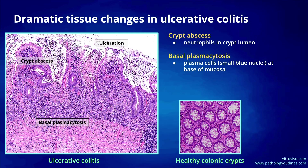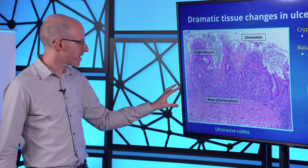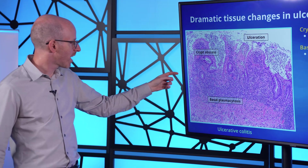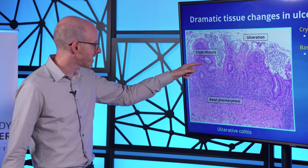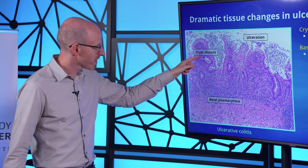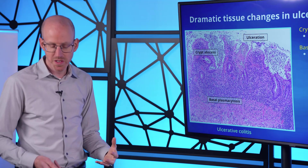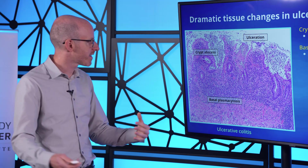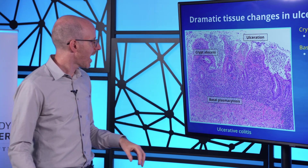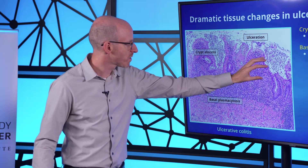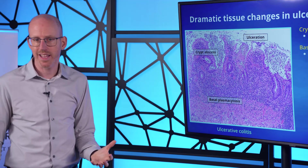Looking at a histology image of ulcerative colitis with healthy colonic crypts shown on the right for comparison, a pathologist can immediately spot several features. First, crypt abscesses — where neutrophils appear in the center of crypts, responding to bacteria that have infiltrated the mucosa. The pathologist will also spot ulceration — the formation of ulcers in the mucosa — which is where ulcerative colitis gets its name.